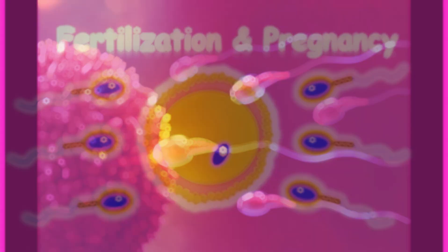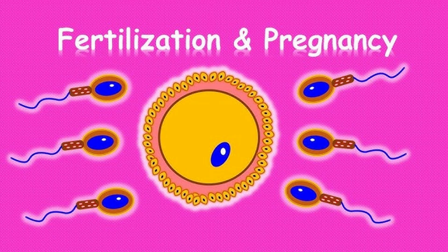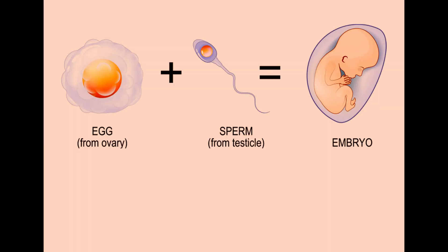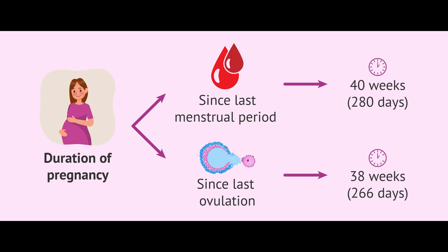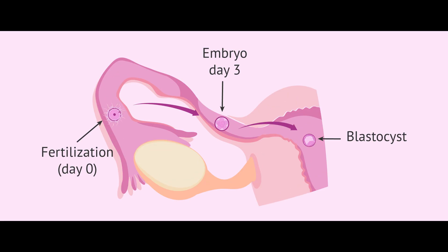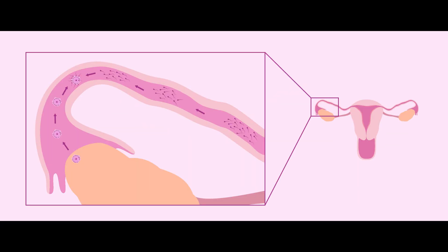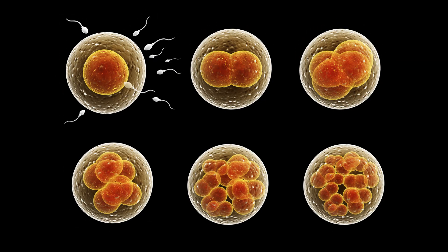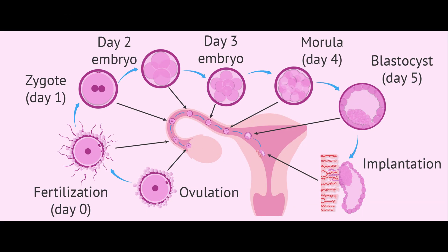Next up is fertilization. Pregnancy begins with fertilization, which is when a male sperm fuses with a female egg. A normal pregnancy lasts about 266 to 270 days, or roughly 9 months. After ovulation, the egg travels through the fallopian tube. Fertilization occurs when a sperm penetrates the egg, forming a zygote. The zygote divides repeatedly and becomes a blastocyst. About 6 to 7 days after fertilization, the blastocyst implants into the uterine lining, initiating pregnancy.